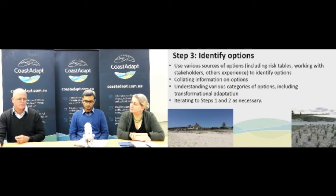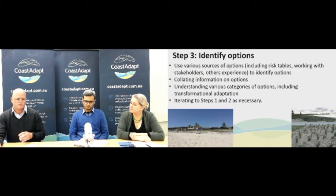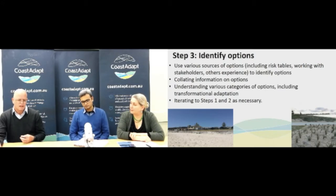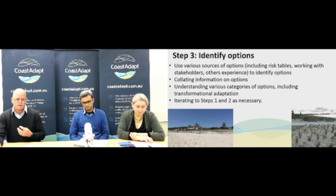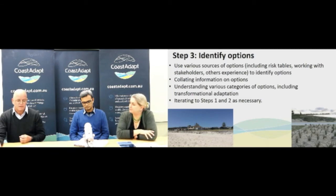Even thinking about the really challenging things for your communities — those transformational options that mean very big changes to what they've got at the moment. An example might be relocating a community from somewhere they've lived for a long time. That is really, really challenging, and we need to think about those steps early on because we need to recognise just how difficult they are to implement and how we need to get people involved for long periods of time beforehand.